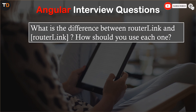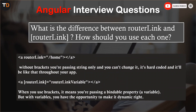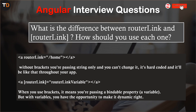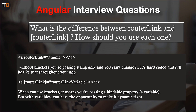What is the difference between router-link and [router-link] with brackets? Without brackets you are passing a string only — it cannot be changed and is hard-coded for your app. With brackets, you are passing a bindable property — a variable. With variables you have the opportunity to make it dynamic.